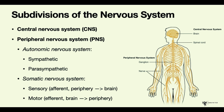The peripheral nervous system refers to the nerves or the fibers that exit from each segment of the spinal cord, as we can see in the image, in order to reach their targets which can be either muscles or organs, for example.